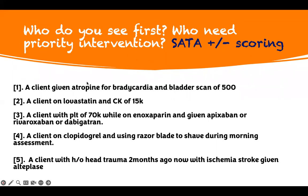First patient: the client was given atropine for bradycardia. So atropine for bradycardia. Now when you scan them — bladder scan — they have 500 mL of urine. Well, what does that mean? Atropine is what? It's an anticholinergic.